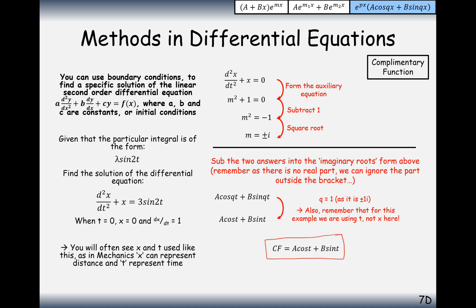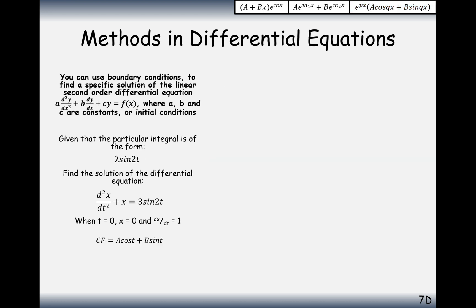A good question to ask yourself is: will there be an overlap between the complementary function and the particular integral? No — not in this case, because the right-hand side is sine 2t. They'd have to have exactly the same coefficient on t to overlap. Here it's sin(t) and sin(2t), so there's no overlap. No multiplying by x needed.